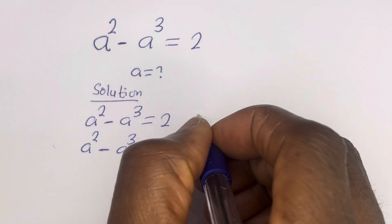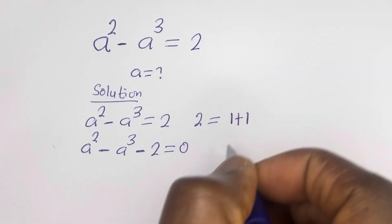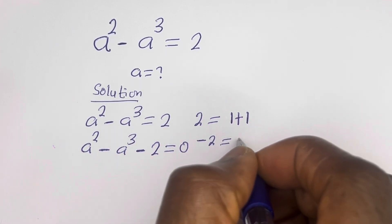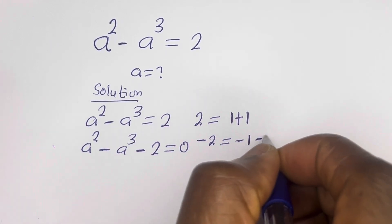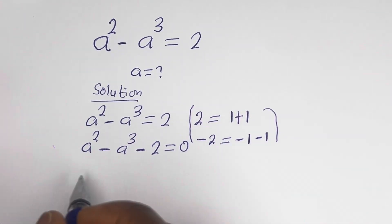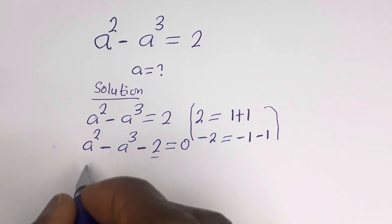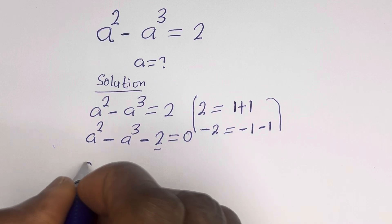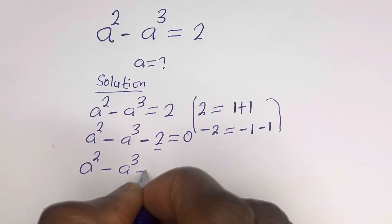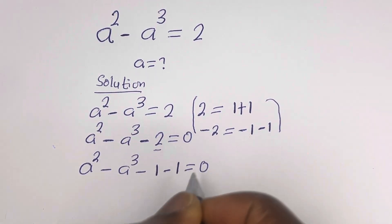Take note that if you have 2, this is equal to 1 plus 1. Also, if you have minus 2, this is equal to minus 1 minus 1. So let's substitute minus 2 with minus 1 minus 1. Then a squared minus a to the power of 3 minus 1 minus 1 is equal to 0.